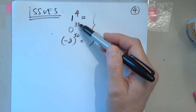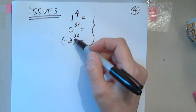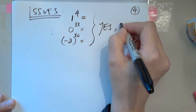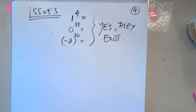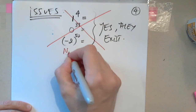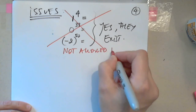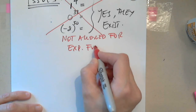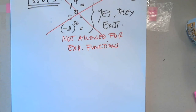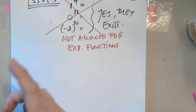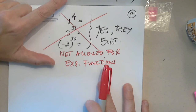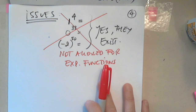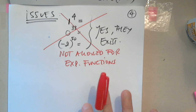Can I raise 0 to the 33rd power? Yes. Can I raise negative 2 to the 50th power? Yes — they exist. However, these three situations — base is 1, base is 0, and base is negative — are not allowed for exponential functions. I cannot have 1 as the base, 0 as the base, or a negative number as the base. Although these exist, they're not allowed in an exponential function.